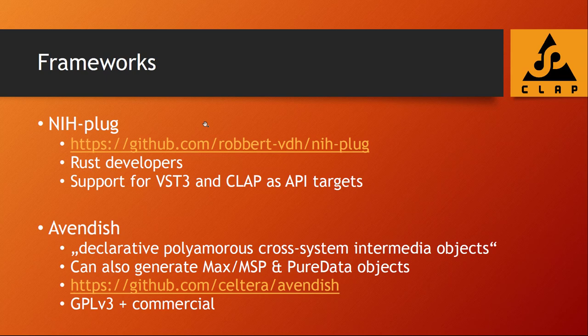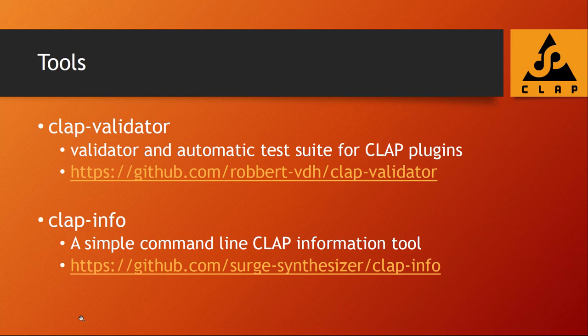Also worth mentioning: NIH-plug is interesting if you're a Rust developer. You can now develop CLAP plugins with Rust, and it already supports CLAP as a target. Something I wasn't aware of is Avantage, which has an interesting description — 'a declarative polyamorous cross-system intermediate object' — basically a similar plugin framework. Interestingly, it can generate Max/MSP and Pure Data objects, which I'm not aware any other framework can do, and it now also supports CLAP. Be aware that Avantage also runs the dual licensing model: GPL v3 plus a commercial license with fees.